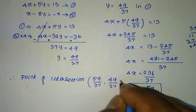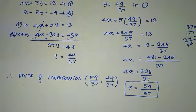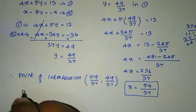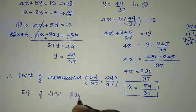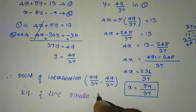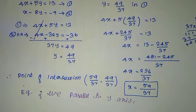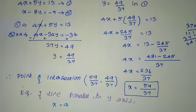The equation of line parallel to y-axis passing through this point. Equation of line parallel to y-axis is x equal to a, where a is the x-coordinate.